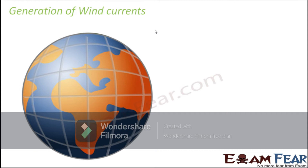When you look at the entire earth, there are certain regions we are going to talk about. This central line at the middle of the earth is called the equator, and the two extreme sides are called the poles — the North Pole and South Pole. When we talk about wind currents, we are talking about the movement of air, which is controlled to a large extent by the sun, because different regions of the earth receive different amounts of sunlight due to the shape of the earth.